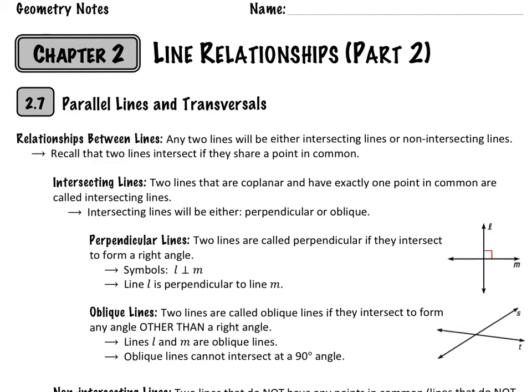In the second part of chapter 2, we're going to be adding more definitions and theorems to our toolkit that we can use in writing proofs. In 2.7 we're going to be looking at parallel lines and transversals. This is a long section so we're covering this over several days of class and three different videos. We're going to start out first by talking about basic relationships between lines.